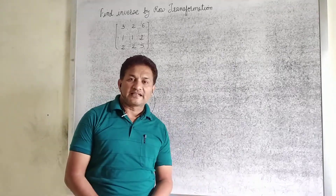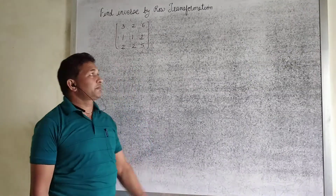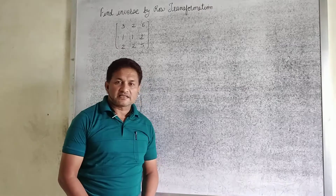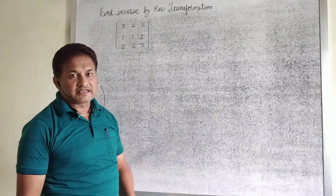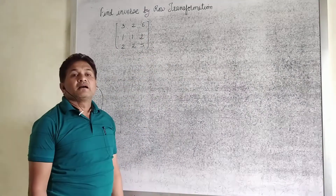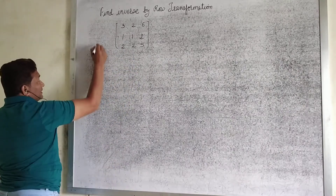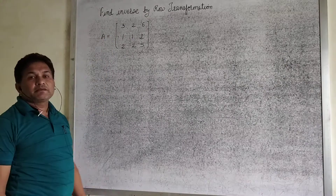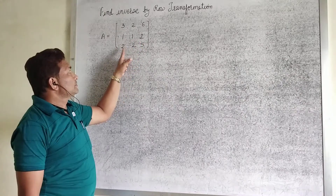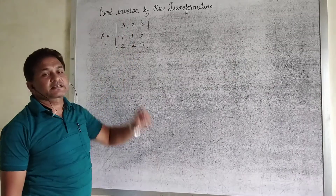Here we are looking at an example of matrices to find the inverse of a matrix by using row transformation. One question is also in this video. Today, we are taking another example. The given matrix A is already written on the board, denoted by A. The matrix A is: 3, 2, 6 / 1, 1, 2 / 2, 3, 4. We have to find the inverse of this given matrix.